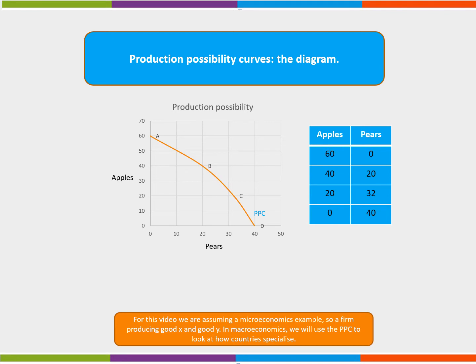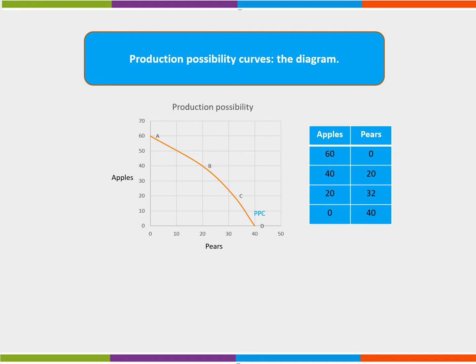Let's take a scenario where a firm can produce the following combinations of apples and pears when operating at maximum capacity. We can see that at point A it can produce 60 apples but no pears. At point B it can produce 40 apples and 20 pears and so on. The opportunity cost of moving from point A to point B is the benefit foregone of the next best alternative, that is the apples lost when producing pears instead of them.